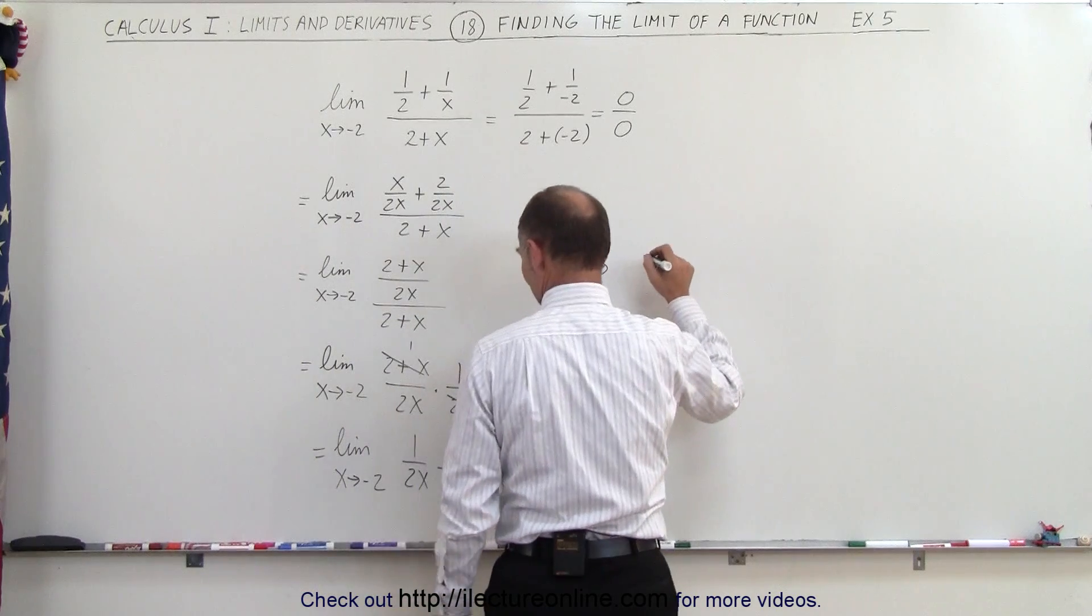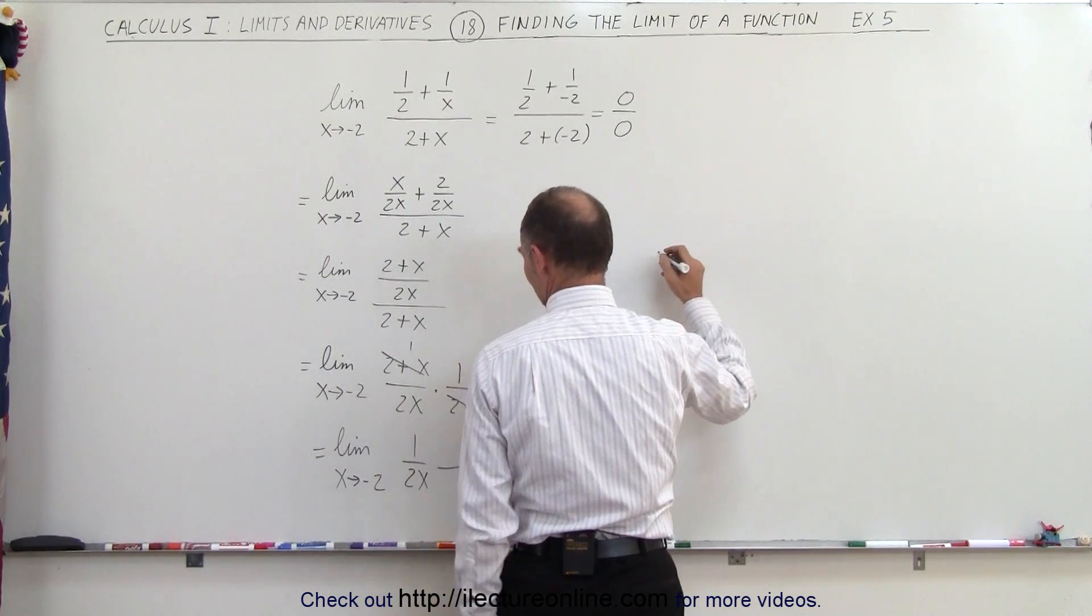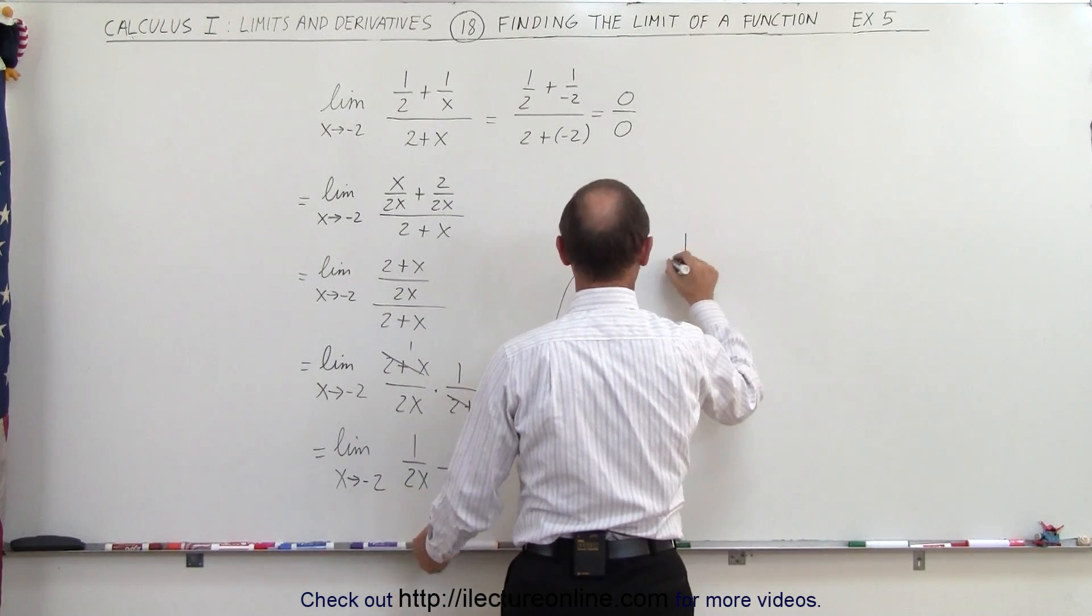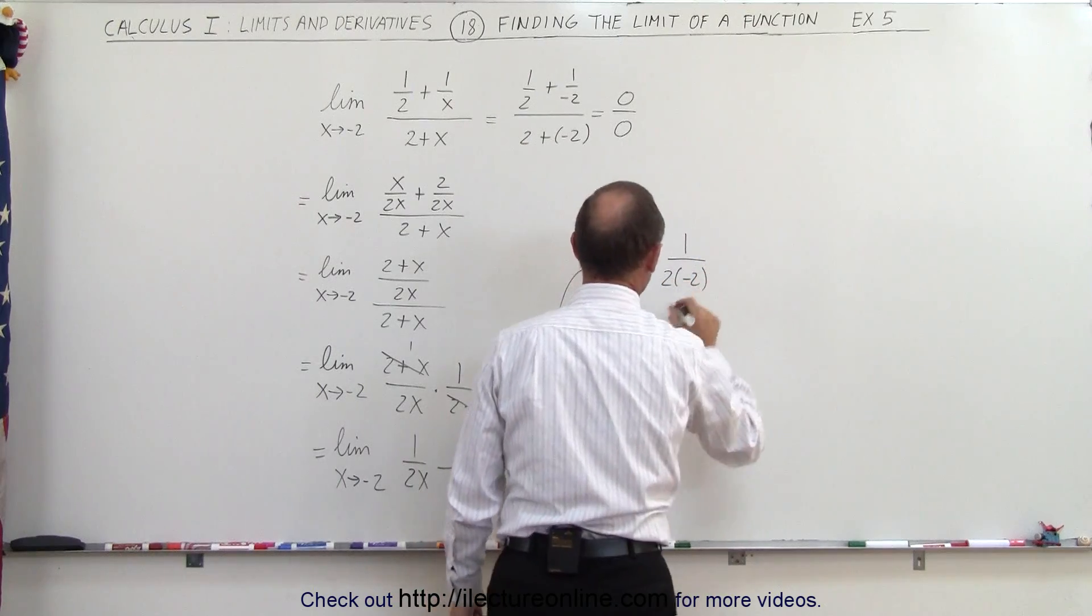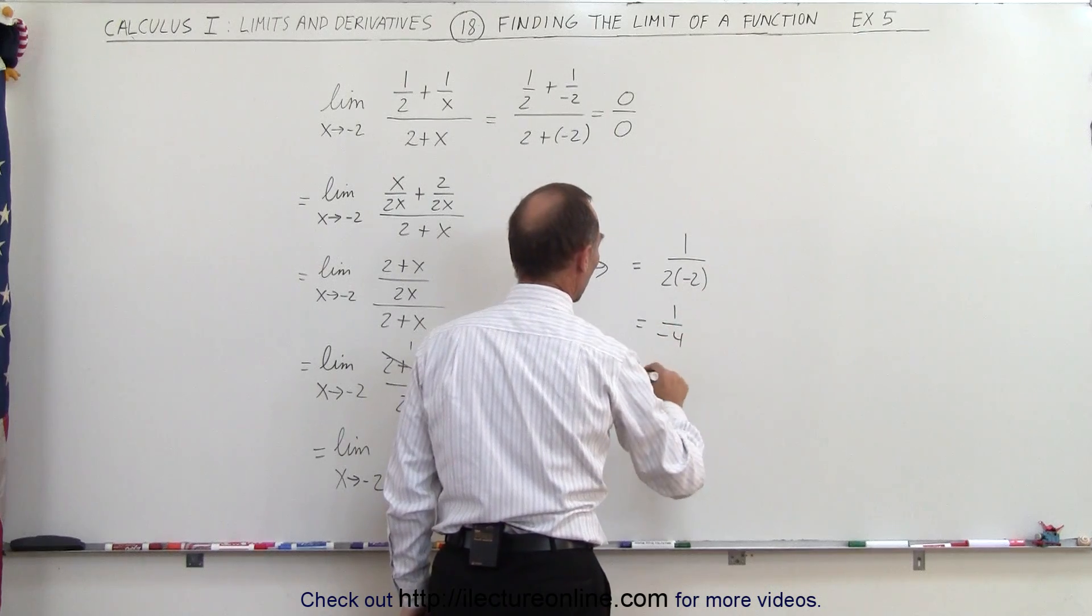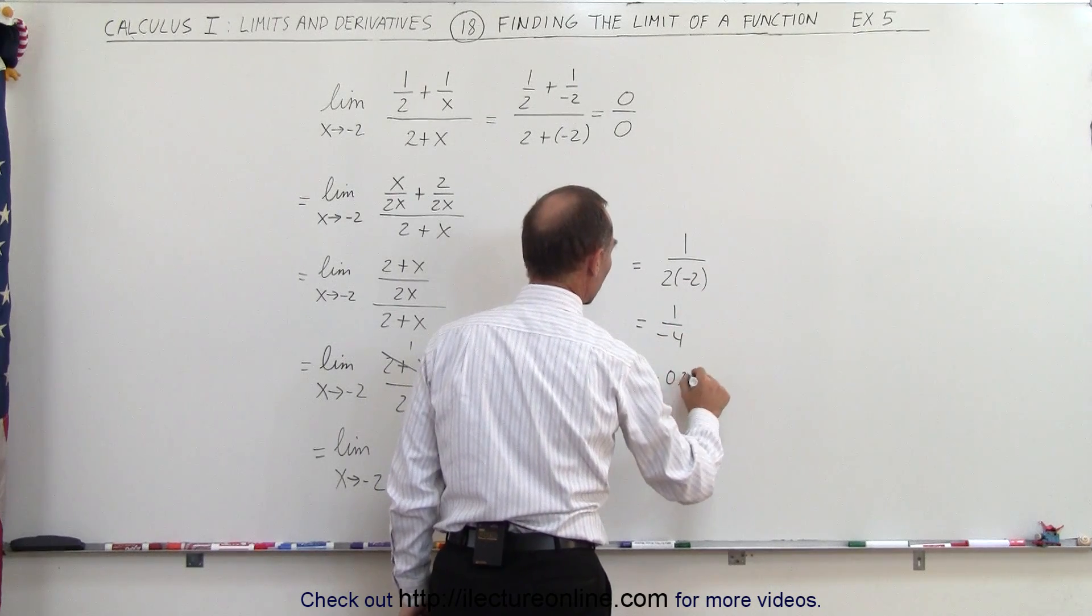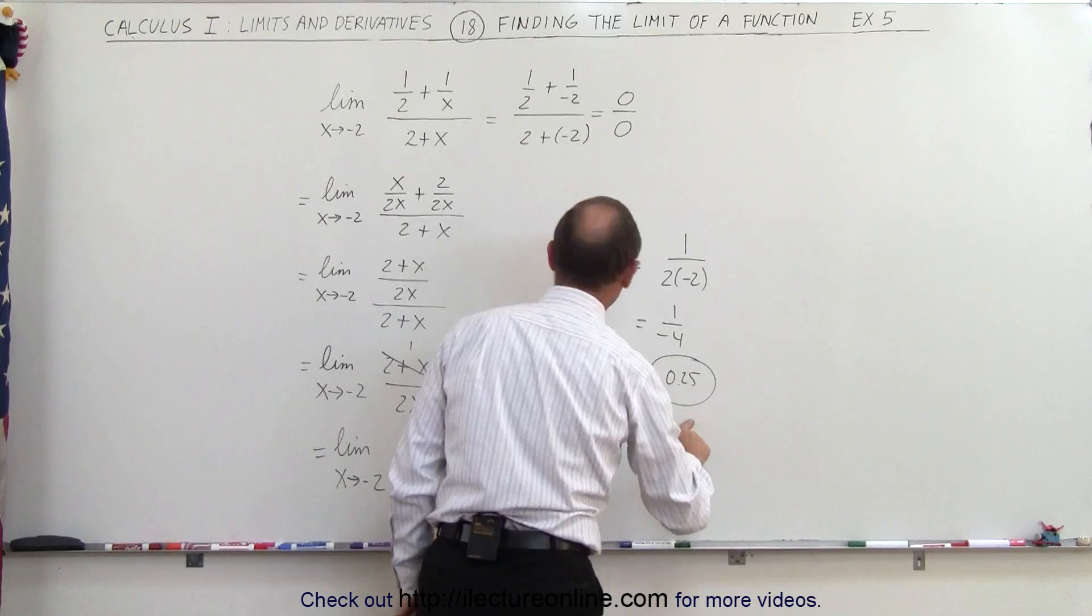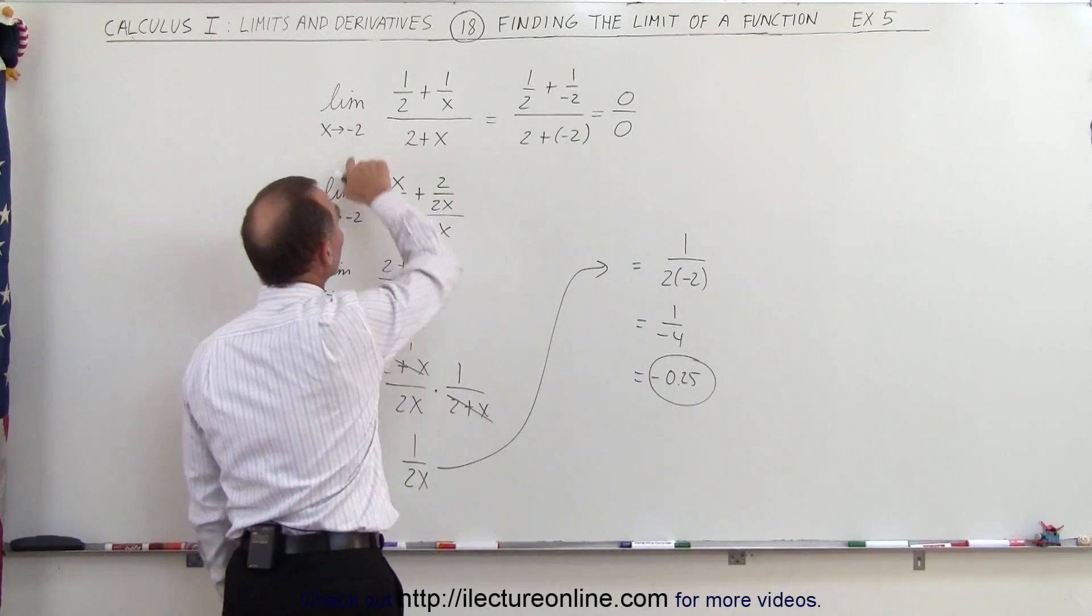So this therefore becomes the limit, well we're going to plug in the limit, so this is equal to 1 over 2 times negative 2 because as x approaches negative 2 this then becomes equal to 1 over negative 4 or a negative 0.25 and that would be the limit as we allow x to approach negative 2.